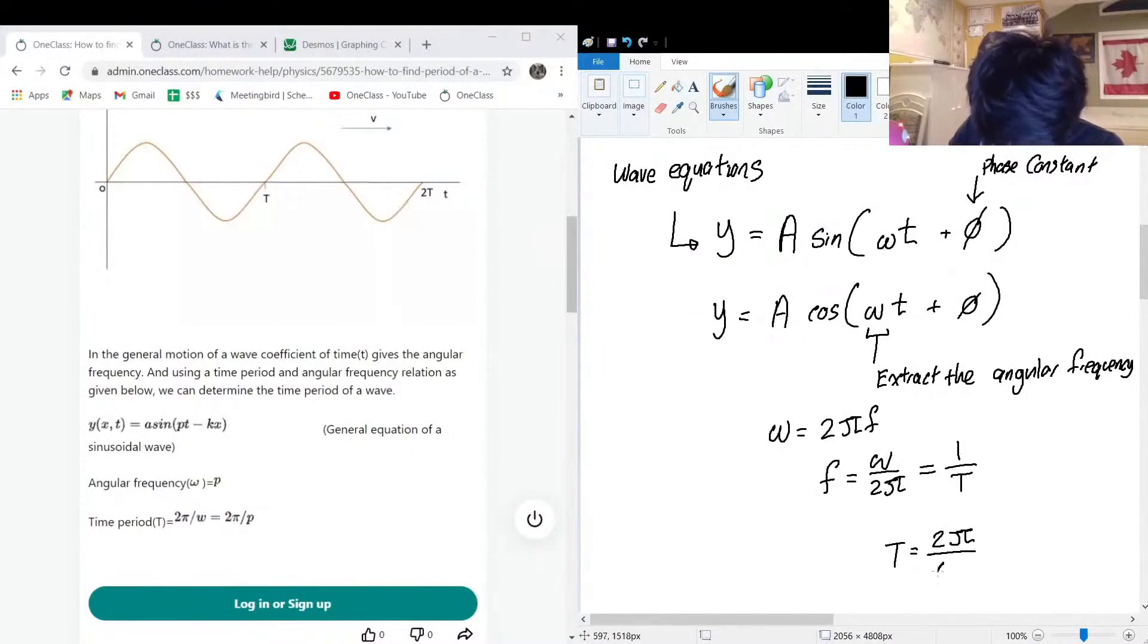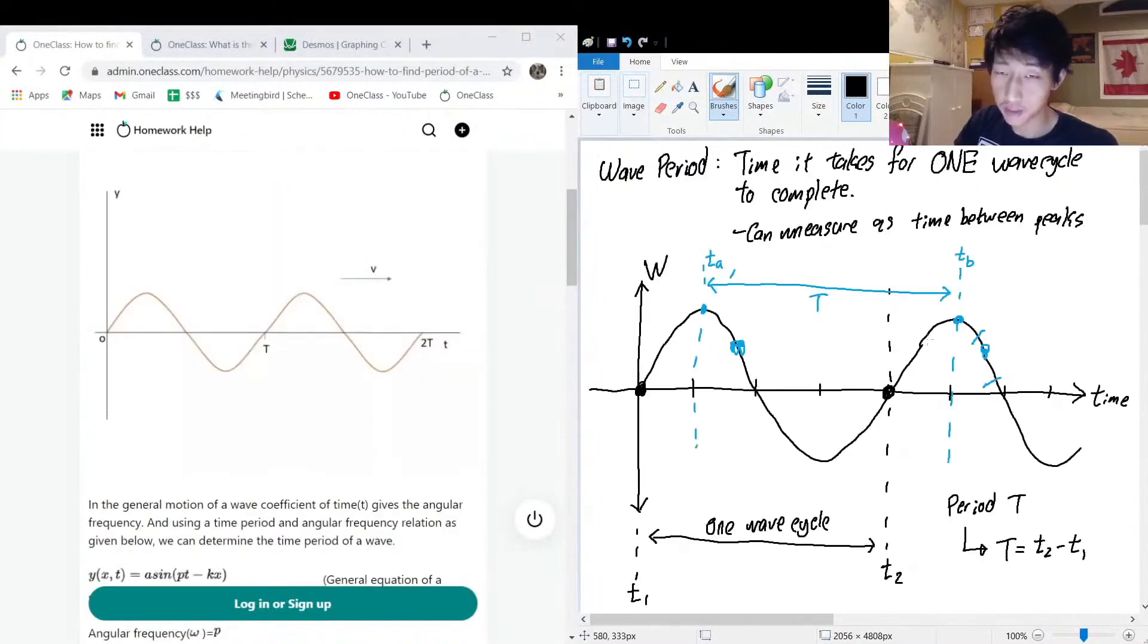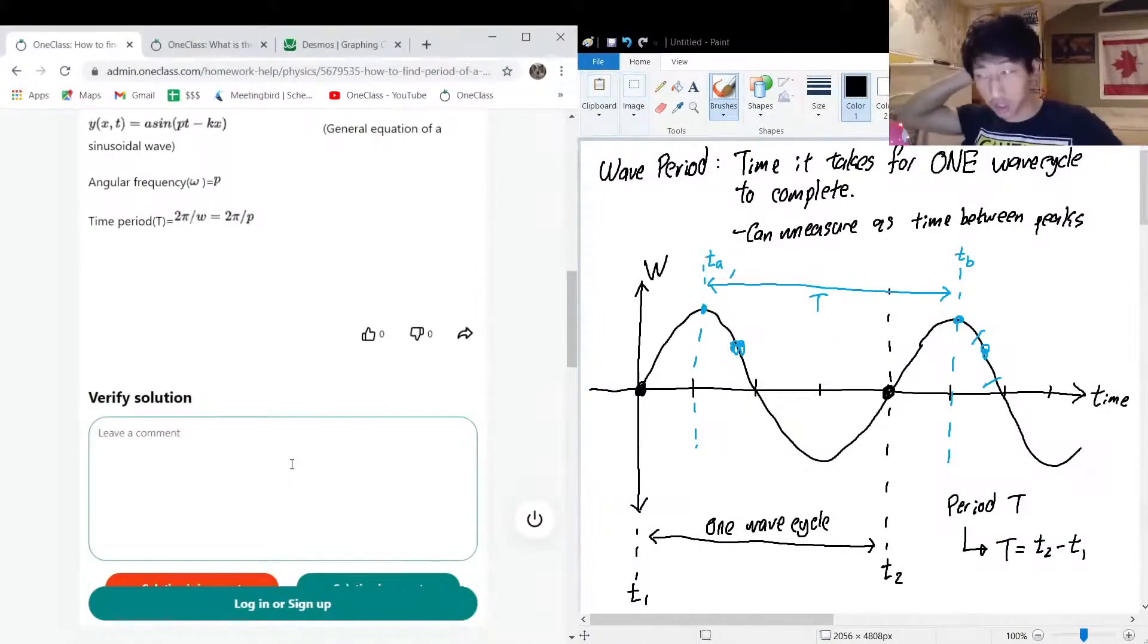Now I'm not sure why they use p for angular frequency—it could be a formatting thing—but this would be how you find the period of a wave if you are given its equation. But if you're given it visually, just identify where the wave starts, where the wave ends, and look for the time between them, and that will be your period. So yeah, the above solution here is good.